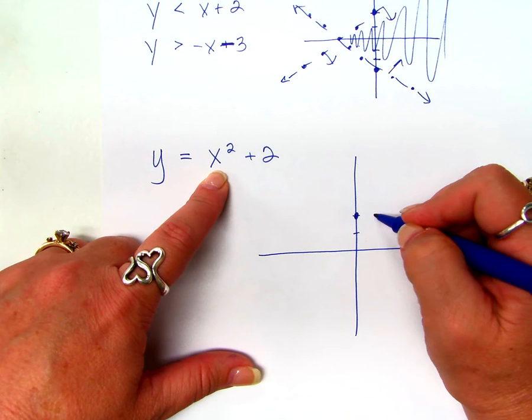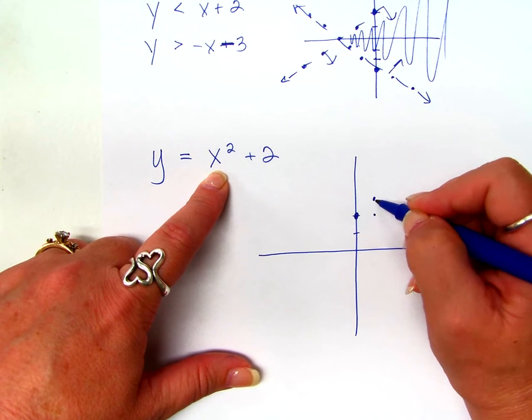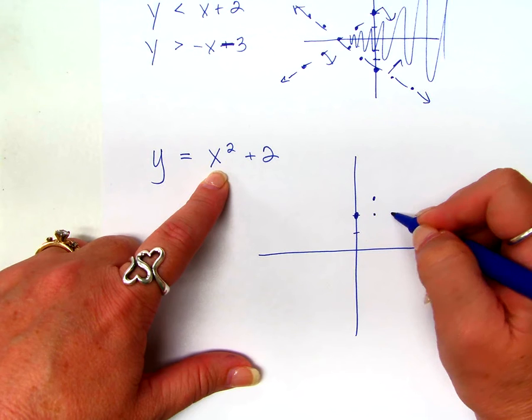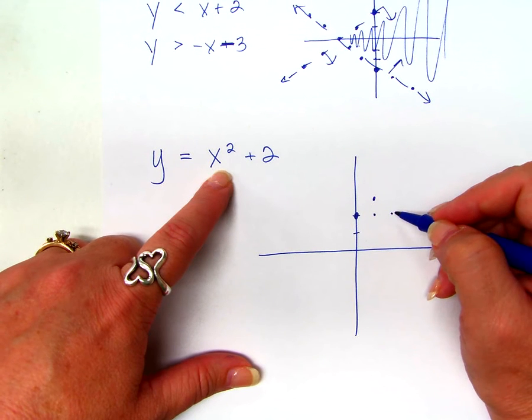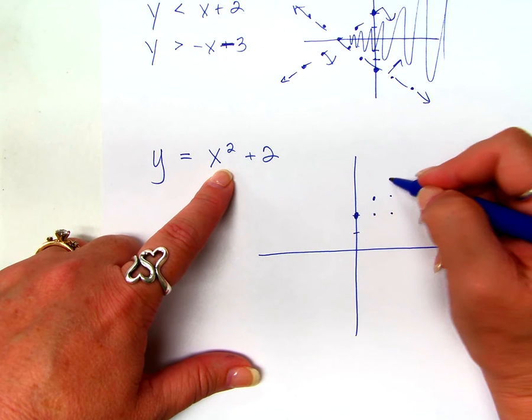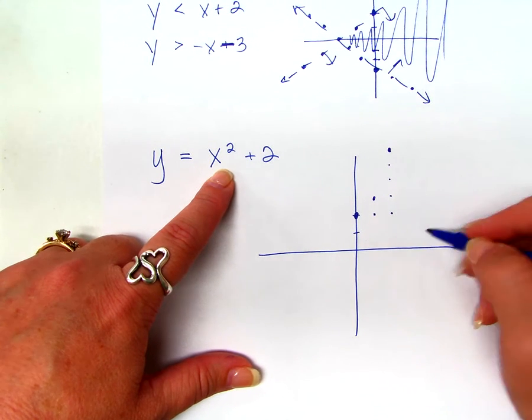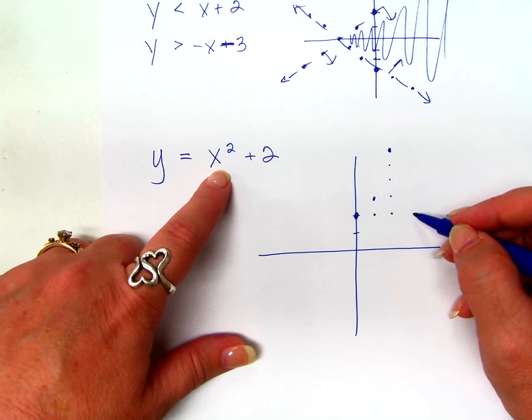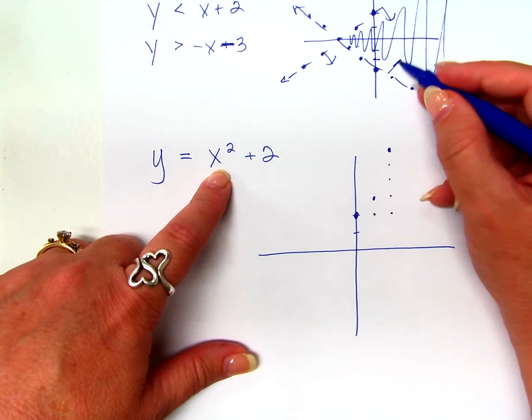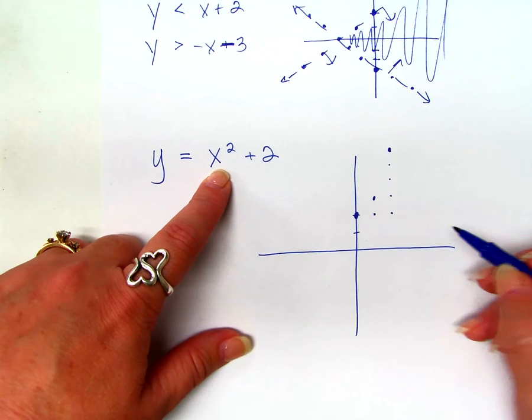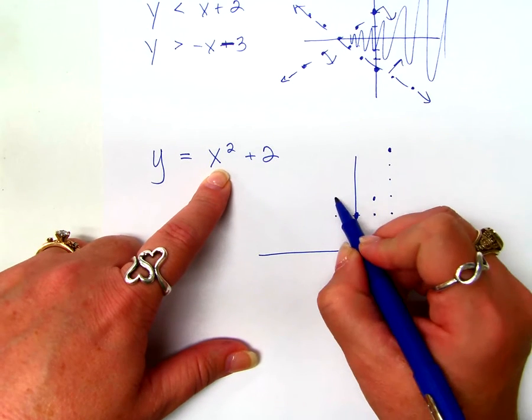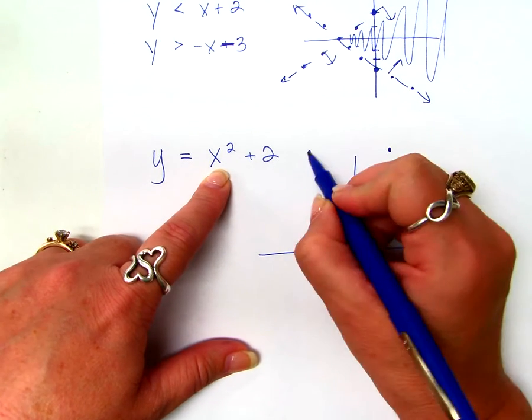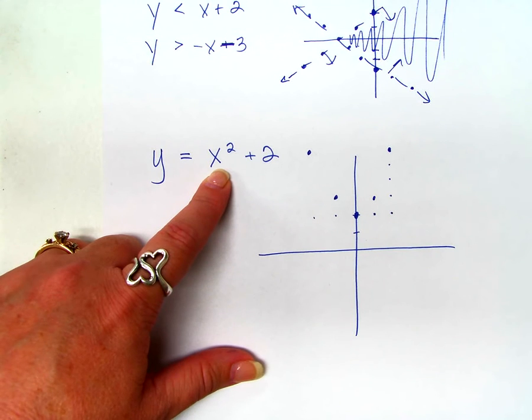So, I go over one from the vertex, up one, because one squared is one. I go over two from the vertex, and up how many? Four. Four, because two squared is four. If I go over three, how much could I go up? Nine. Nine, because three squared is nine. It's going to be way up here, off the graph, right? But, I also know parabolas are symmetric, so it looks like that, correct? Yes.